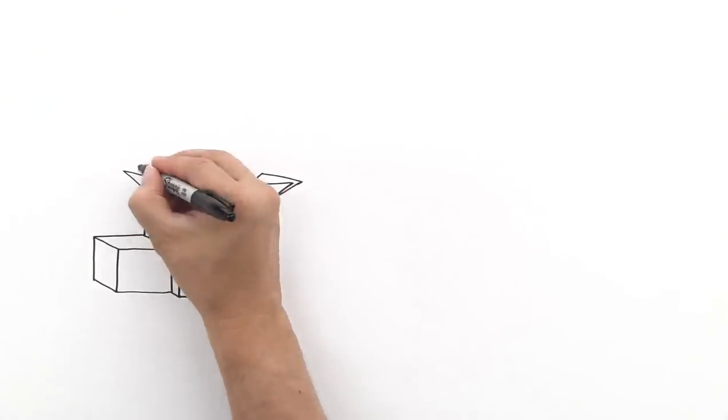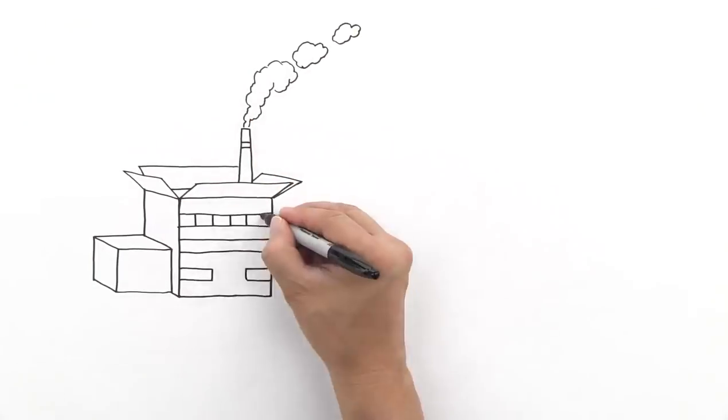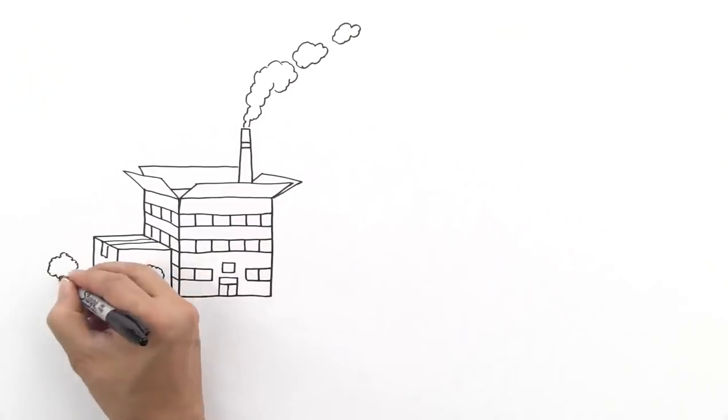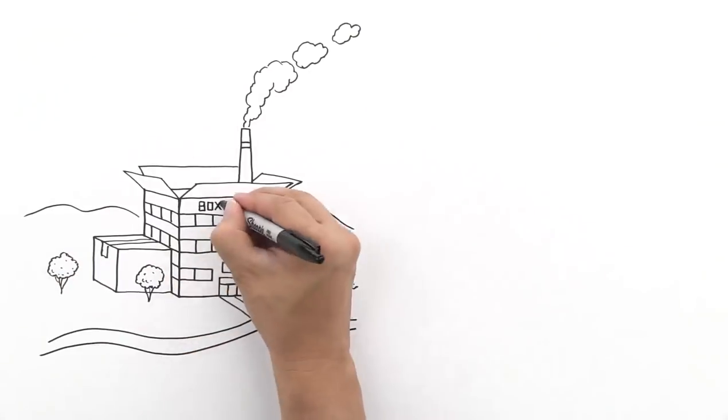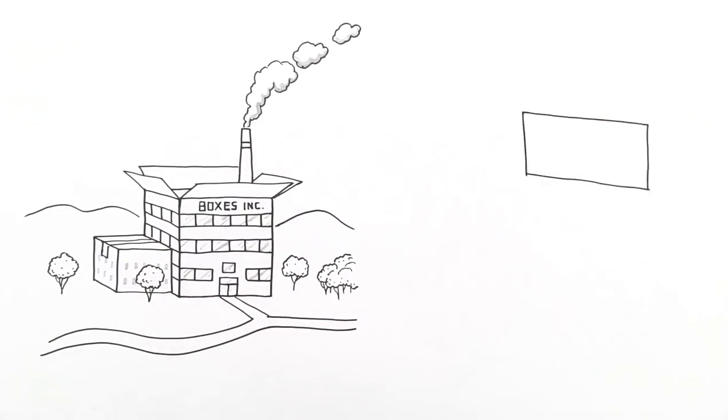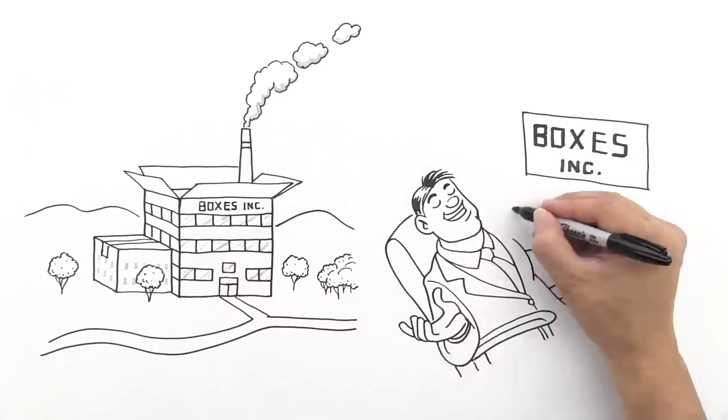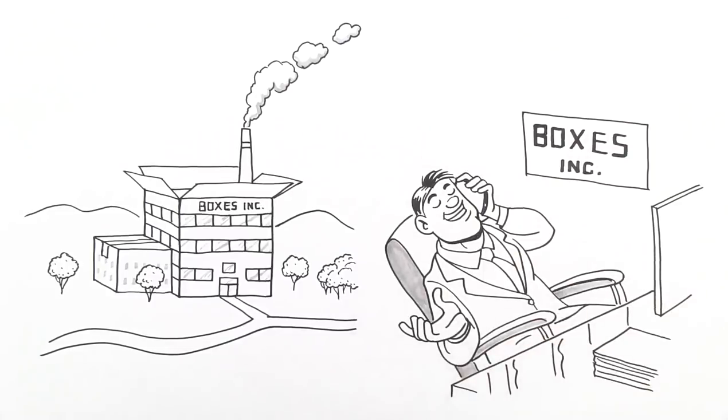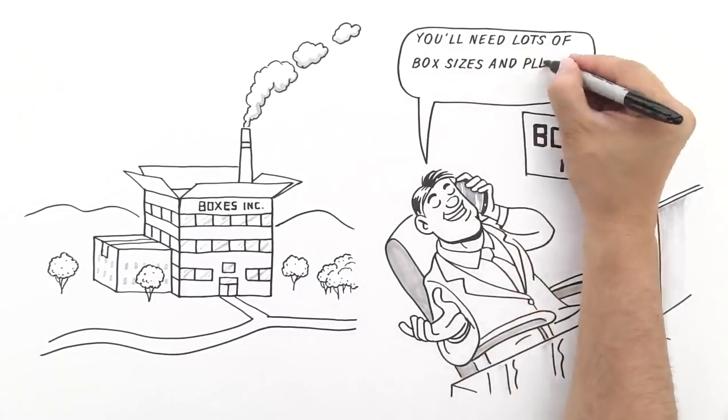To find the answer, let's look at how companies have traditionally packaged products through the years. It starts with a large box manufacturer that makes millions of pre-sized boxes. Then, these boxes are either sold directly or through a middleman to the companies that actually produce and package the products we use.